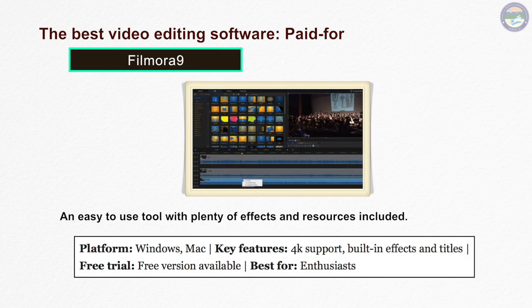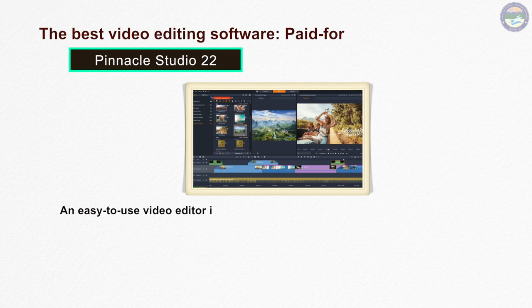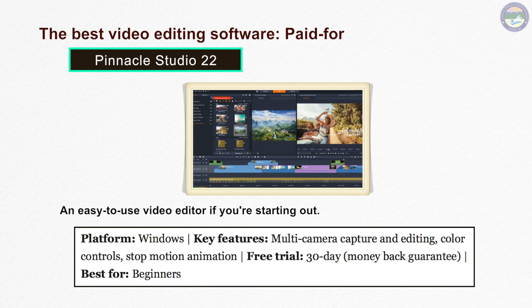Filmora 9 एक simple editing software है जो 4K वीडियो को support करता है। इसमें built-in effects और titles मिल जाते हैं। ये काफी सस्ता software है और आप इसका free version भी try कर सकते हैं। अगर आप editing में beginners हैं तो Pinnacle Studio 22 एक बेहद easy software है। इसमें multi-camera capture और edit, color control, और stop motion animation का feature मिलता है।